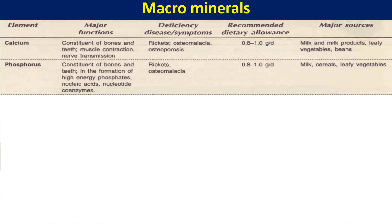Phosphorus is again a major constituent of bone and teeth, required for the formation of high-energy compounds like ATP, GTP, CTP, as well as nucleotides and coenzymes. Deficiency of phosphorus also causes rickets and osteomalacia. Its RDA is 0.8 to 1 gram per day and major sources are milk, cereals, and leafy vegetables.